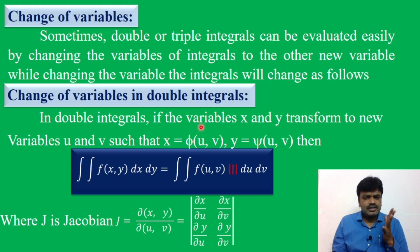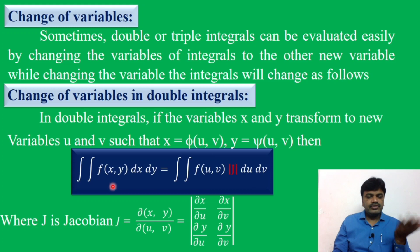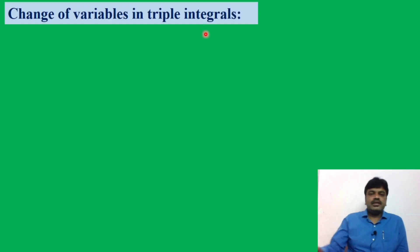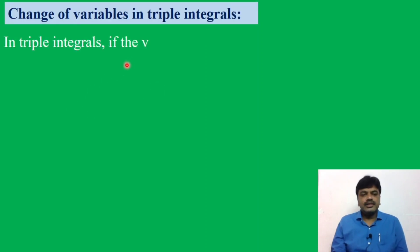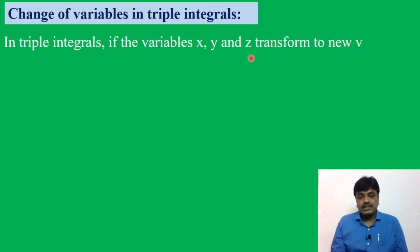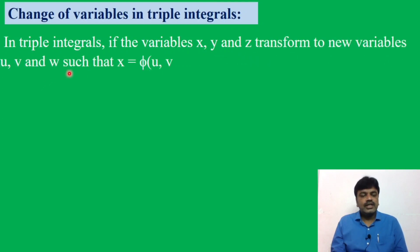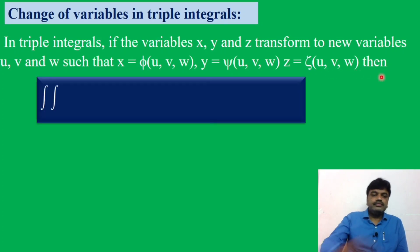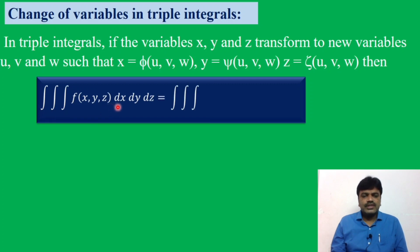Now, for triple integrals, we have u, v, w — one more variable. In a triple integral, if the variables x, y, z transform to new variables u, v, w, such that x = φ(u,v,w), y = ψ(u,v,w), z = χ(u,v,w), then ∭f(x,y,z) dx dy dz equals ∭f(u,v,w) |J| du dv dw.